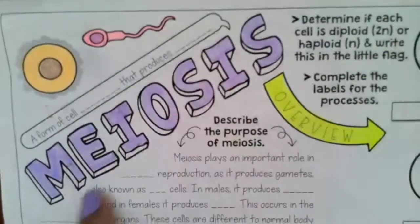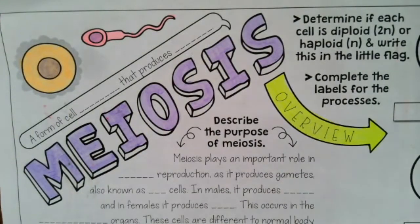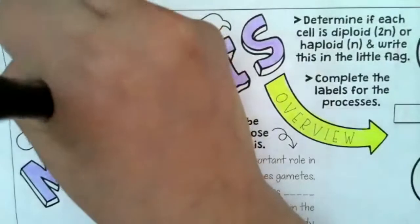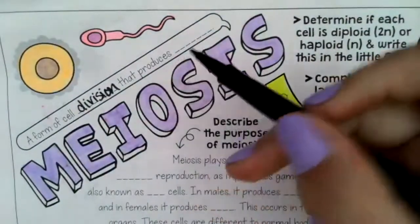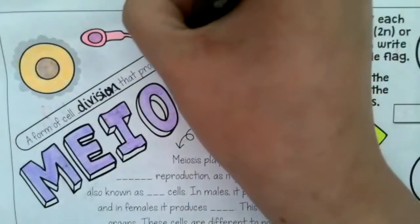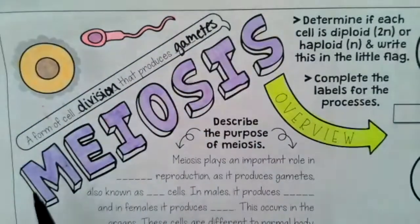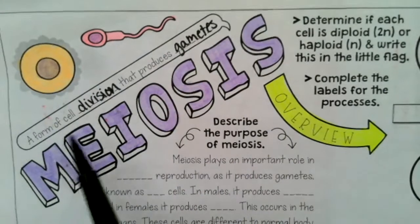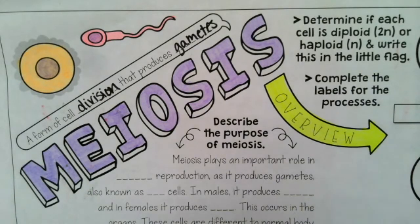Anyways, we're going to get started on this side because this side tells us the definition of meiosis. The definition of meiosis is that it is a form of cell division that is going to end up producing these things called gametes. So meiosis is a form of cell division that produces gametes.